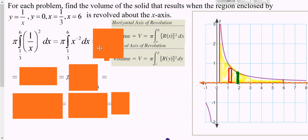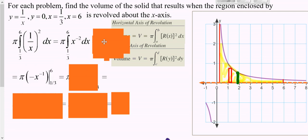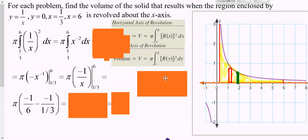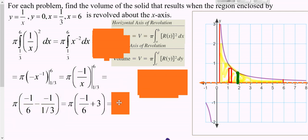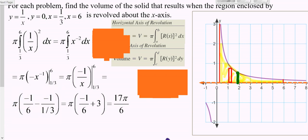It's easier to integrate with a negative exponent rather than leaving it in the denominator. Increase your exponent by one, then you may want to drop that negative exponent back down, plug in your 6 minus what you get when you plug in a third. Type this all in at once and we end up getting 17 pi over 6. When typing this in, don't use pi — leave that out because you know you're going to have pi in your answer.